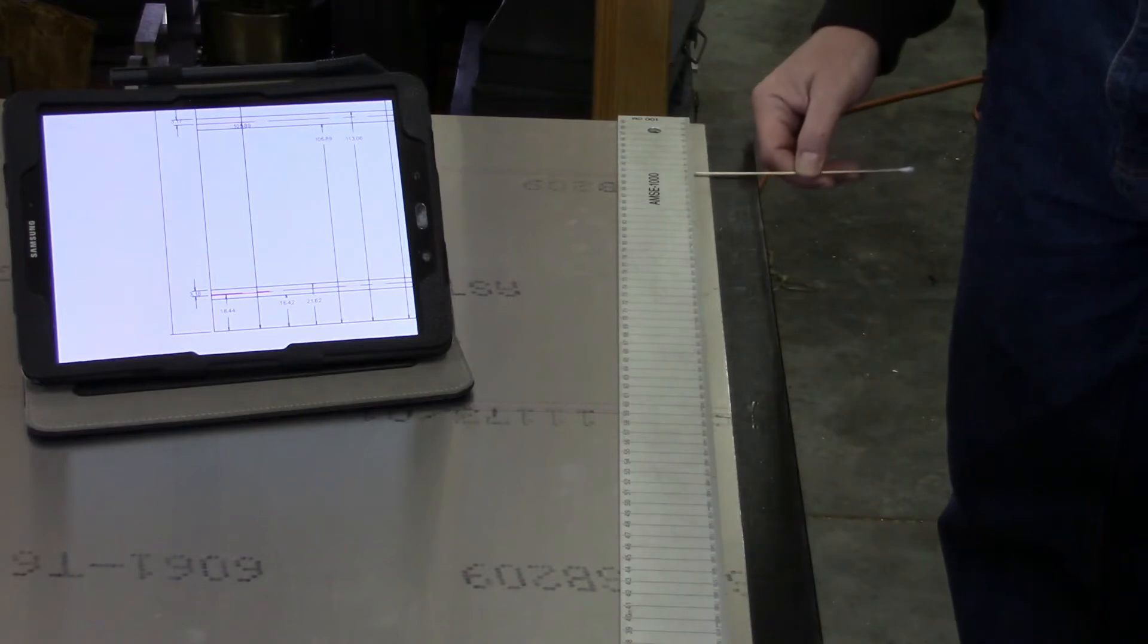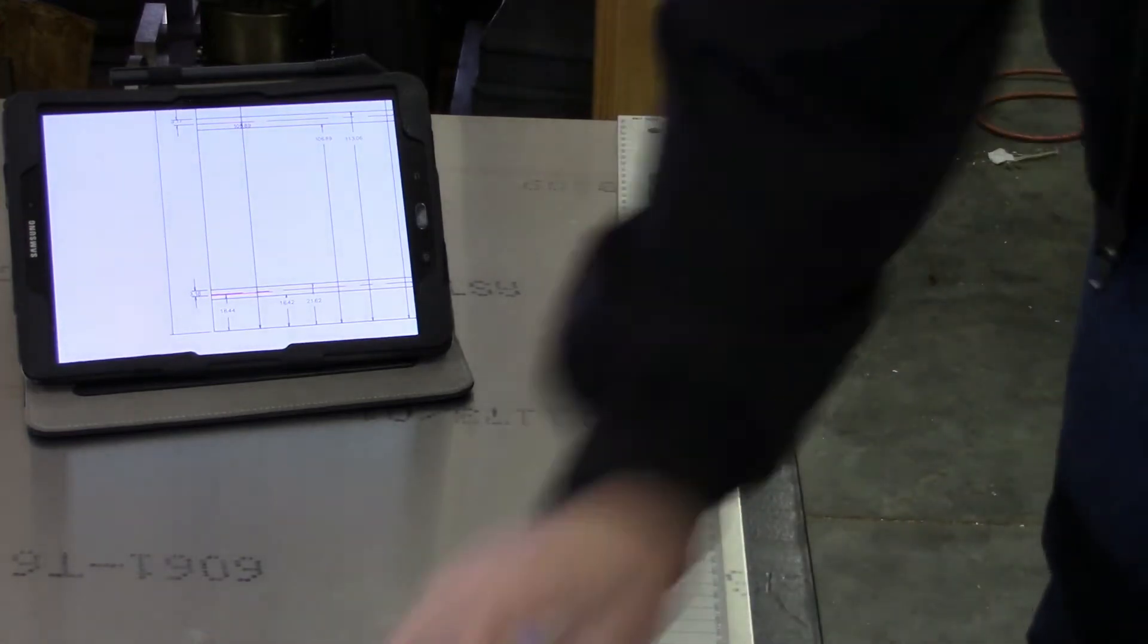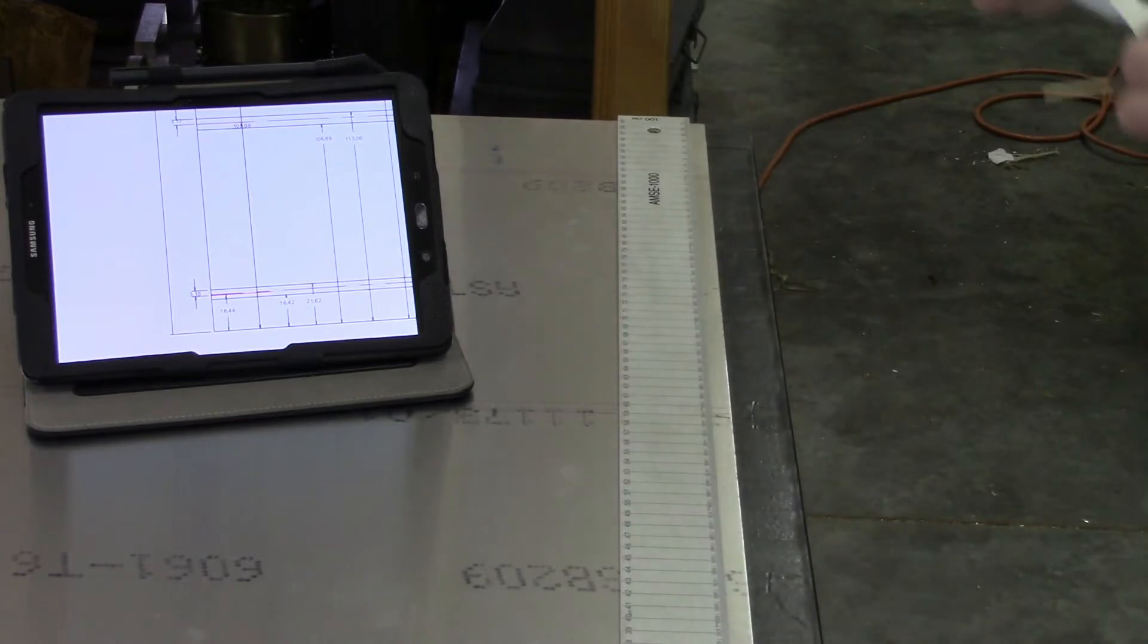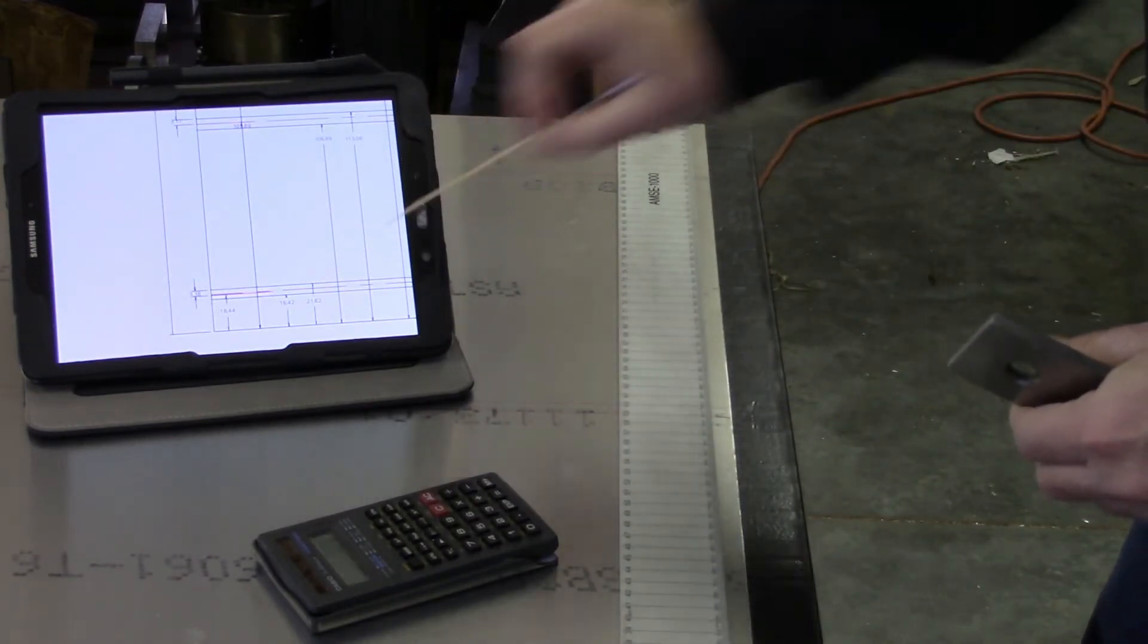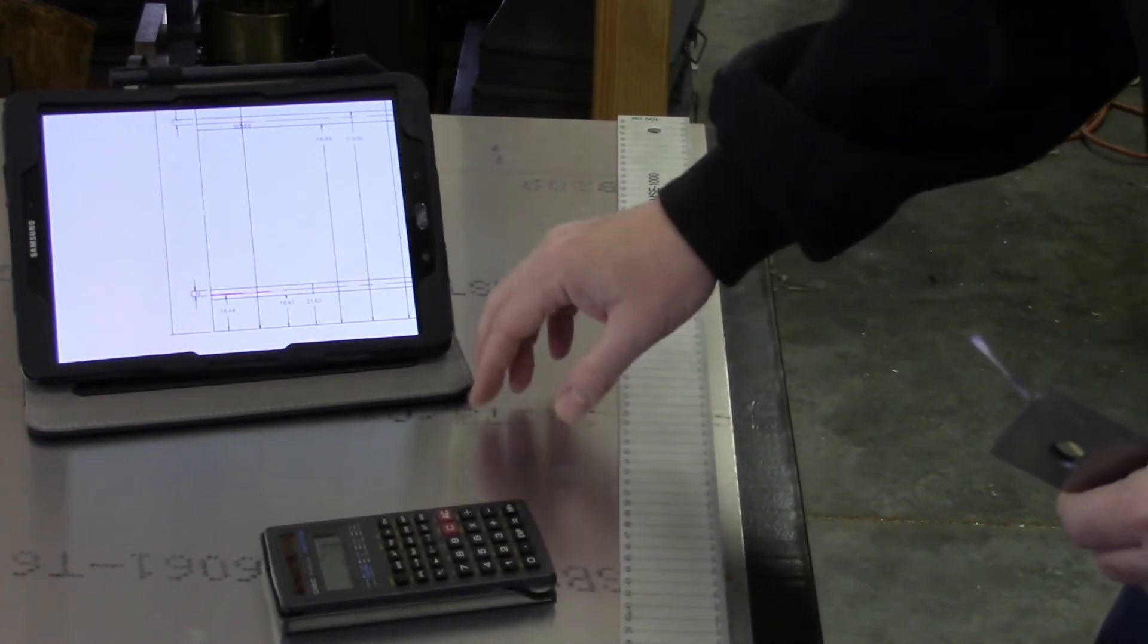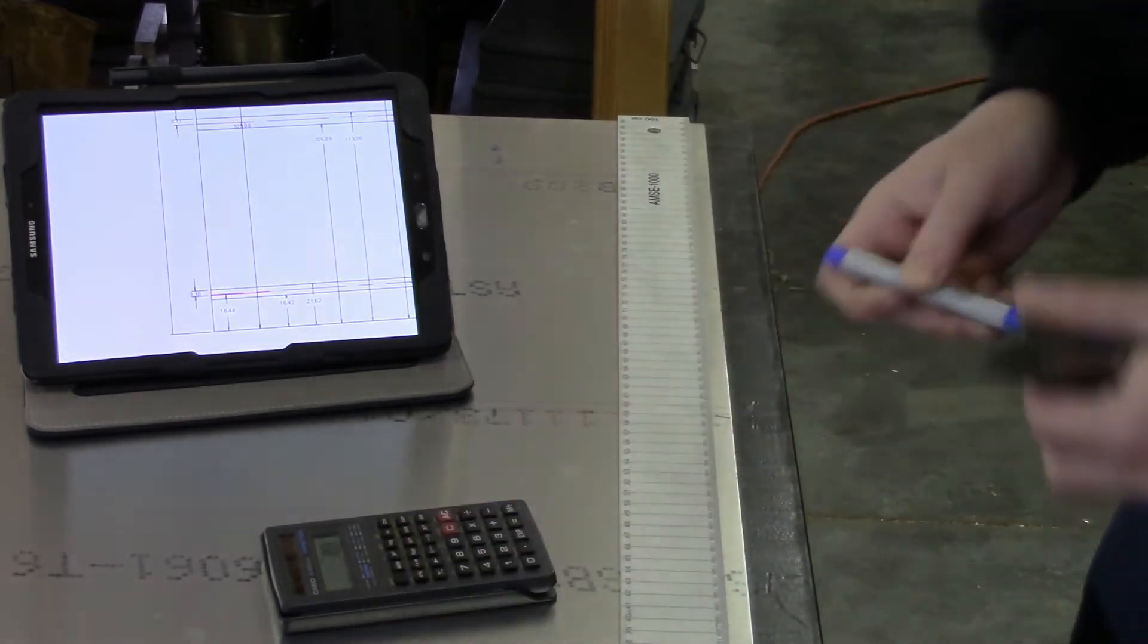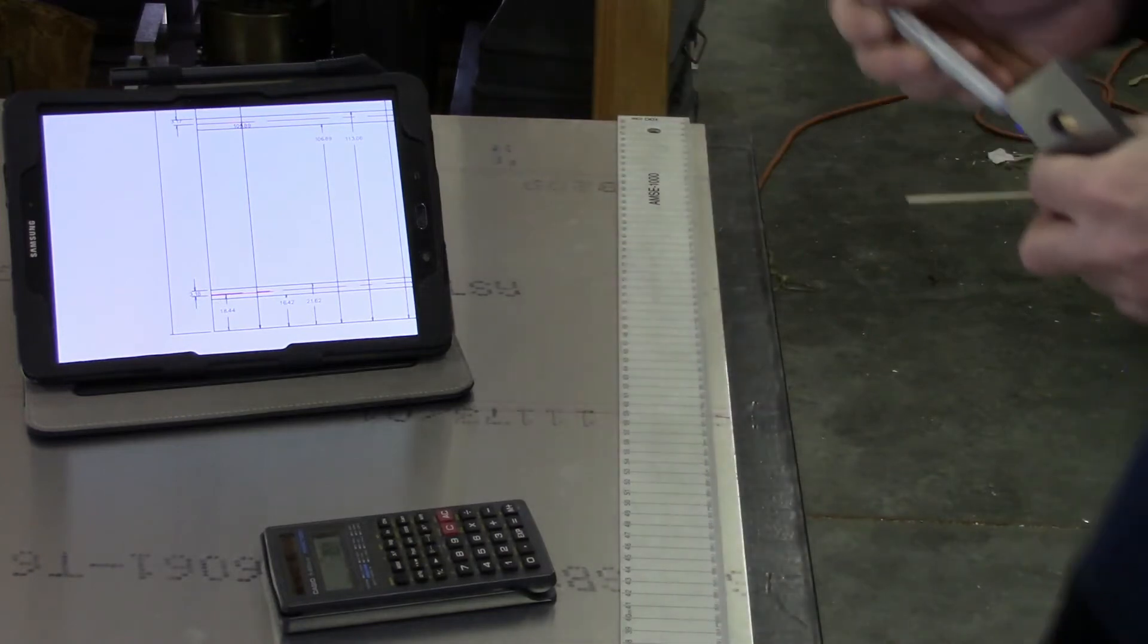We're going to measure the distance from this tangent line to the tangent line of the bend itself. In that case the distance is approximately 87 millimeters and then we're going to take off 3 millimeters because this is supposed to be a 3 millimeter radius. I'm going to note that actual is 84 millimeters.